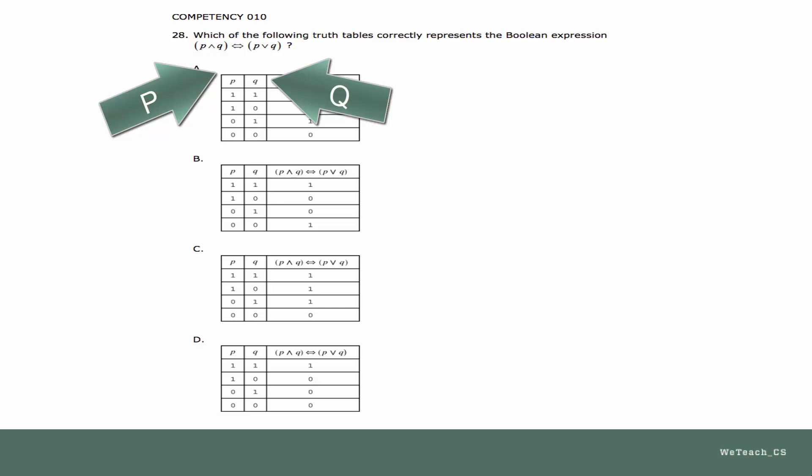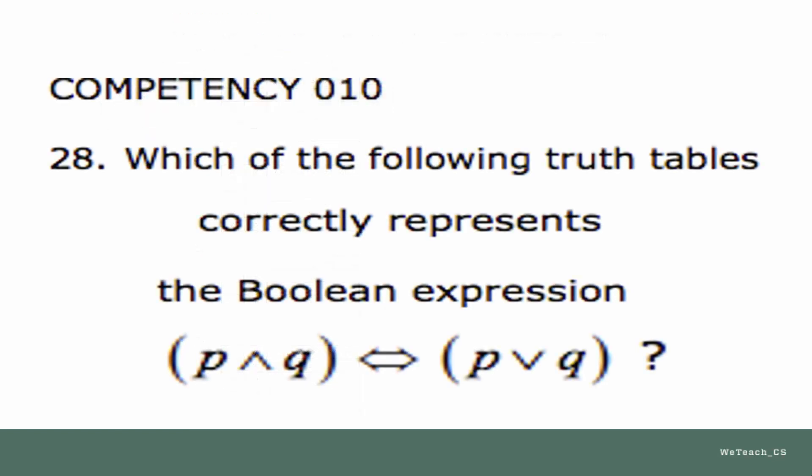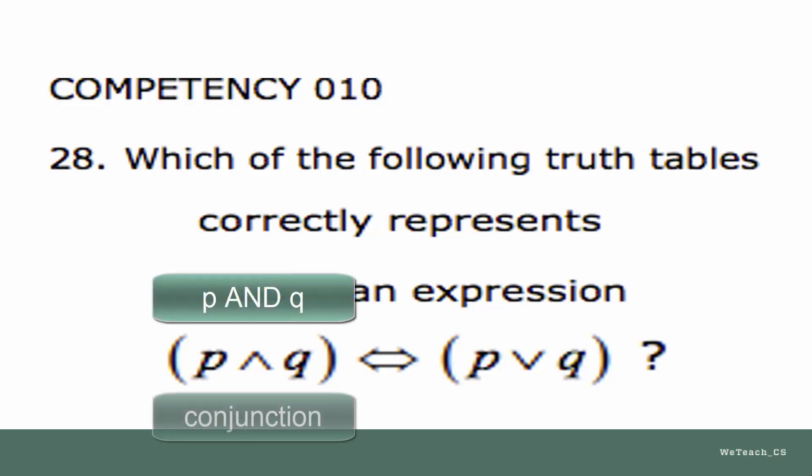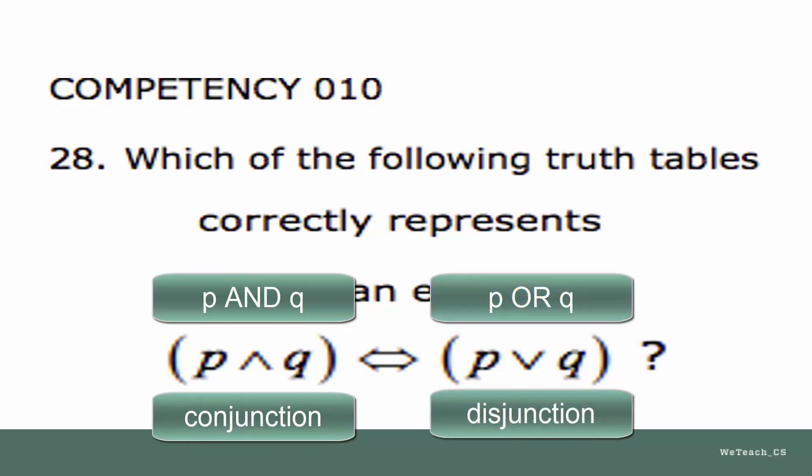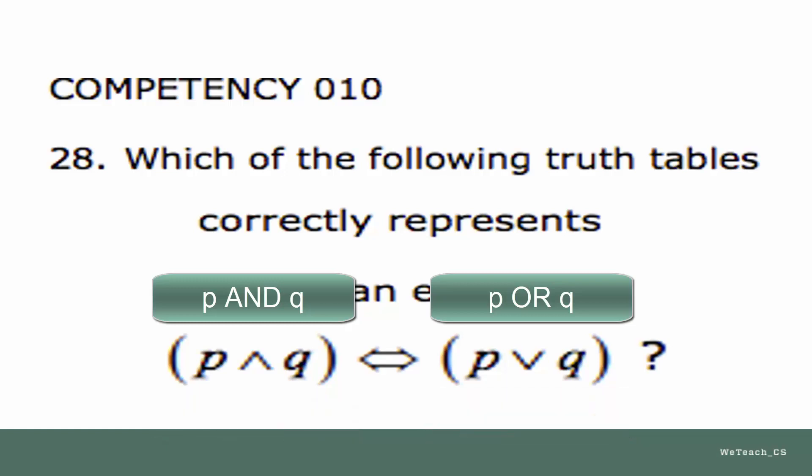To correctly evaluate this expression, we need to remember the meanings of these operators, where the first part of the expression represents P and Q, the conjunction operator, and the second part represents P or Q, called disjunction. It then combines these results of the two parts using the biconditional operator, which is stated using the phrase if and only if.